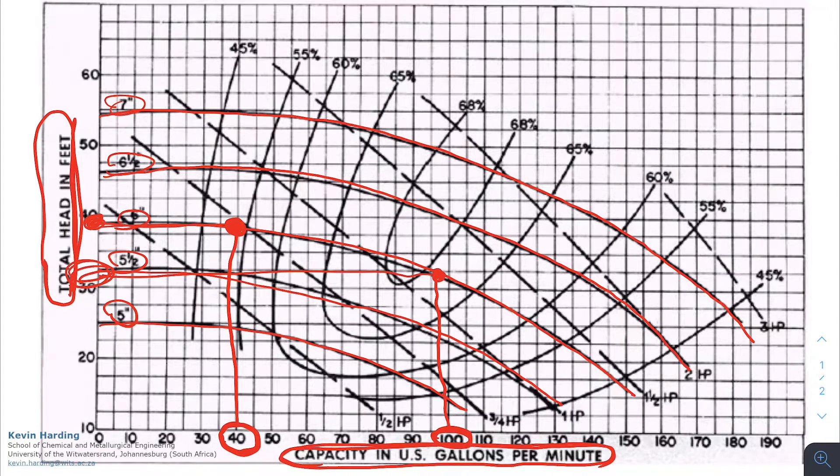So the main role for this pump curve is to give us a relationship between the capacity, the flow rate that our pump can deliver, and the amount of head or the energy in feet - it's a distance value - that we can get from the pump that we have bought.